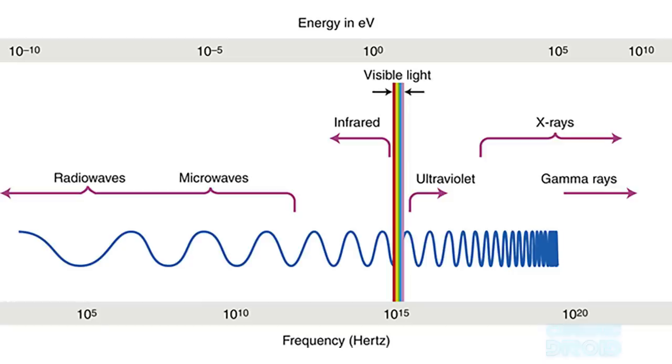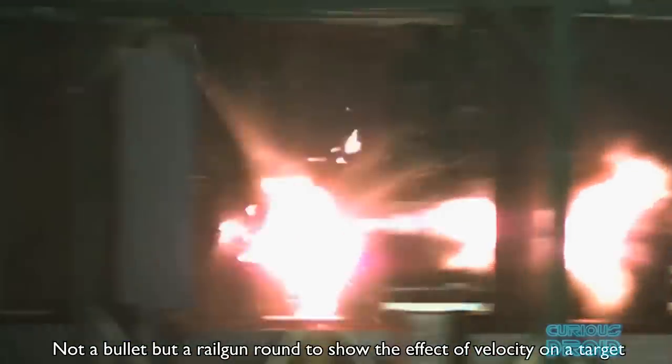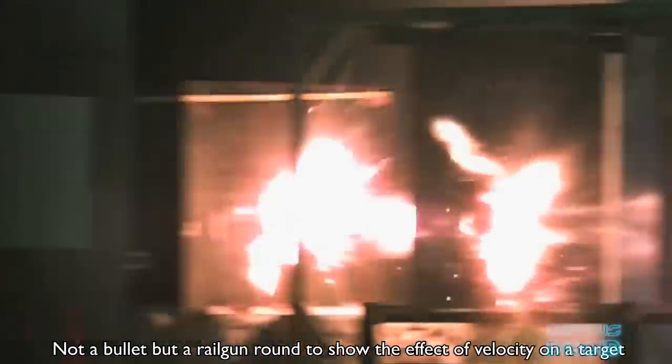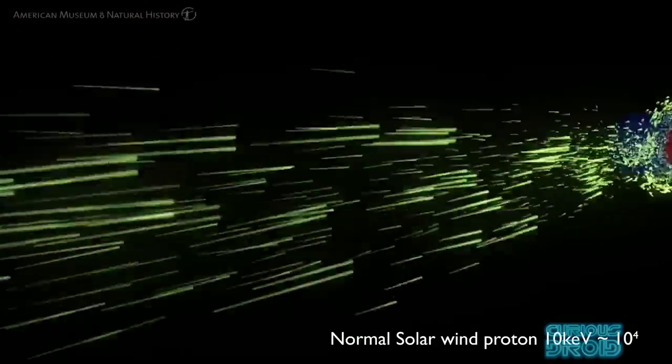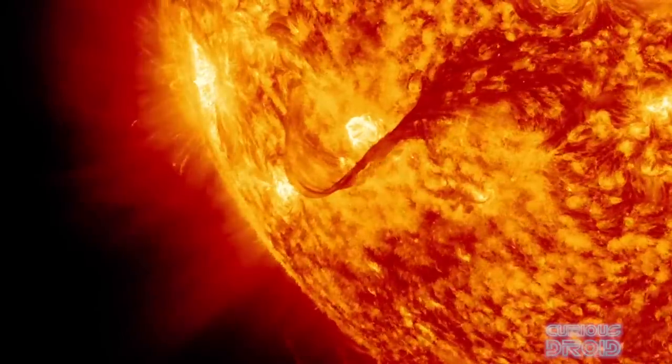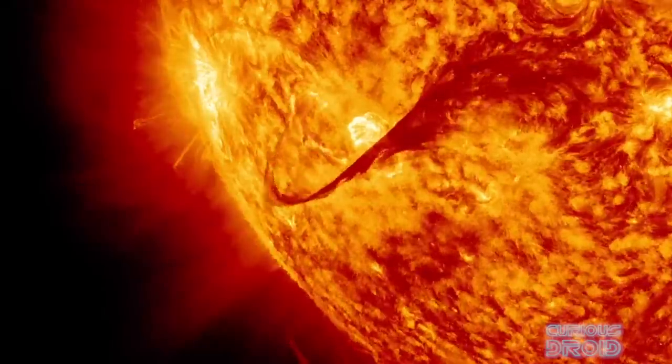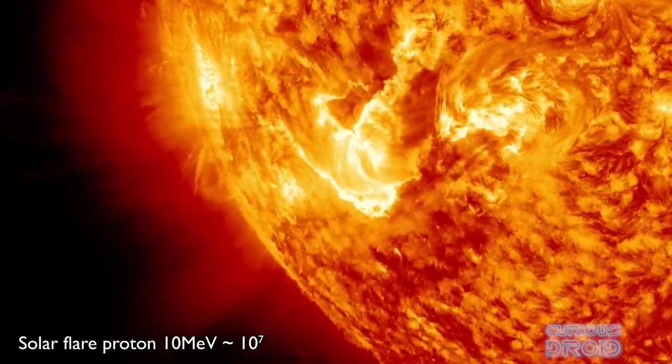What makes them so different is the amount of energy they have, and this is measured in eV or electron volts. The higher the eV, the faster they travel, and like a bullet, the faster it travels, the more kinetic energy it will release when it hits something. A proton in the solar wind might have 10 keV or 10 to the power of 4 electron volts, whereas a proton from a coronal mass ejection or solar flare might have 10 mega electron volts or 10 to the power of 7.